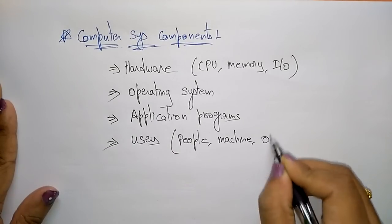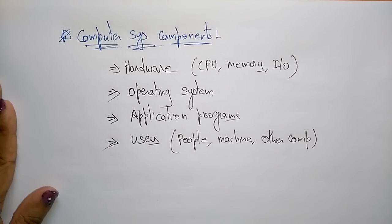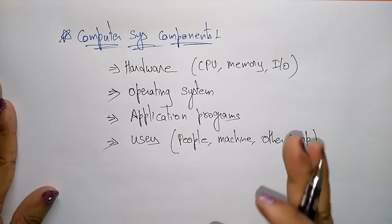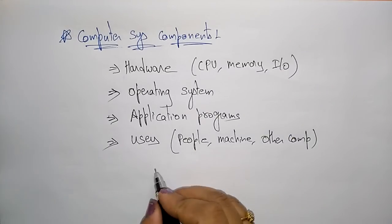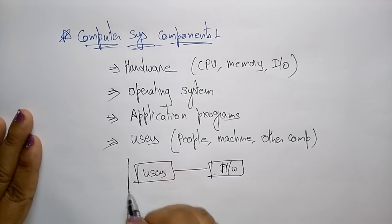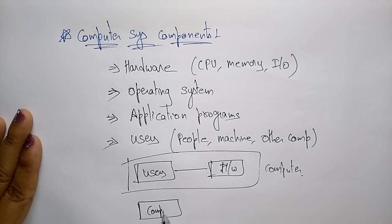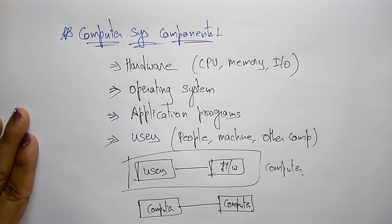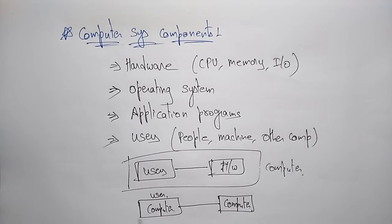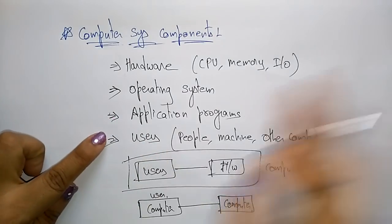Another component present in the computer is the users. The users may be people, or they can be a machine, or other computers — you call all of these users. So whenever you think of a user, don't assume it is only people. The user may be a machine or another computer. The complete computer system components are: hardware, operating system, application programs, and users.